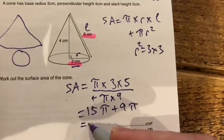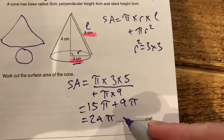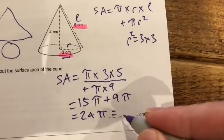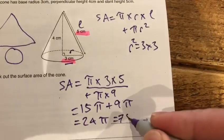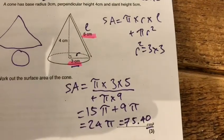So if it's a non-calculator paper, I could just say 24 pi. But if it's a calculator paper, let's use your calculator and we get 75.398, 75.40 square centimetres.